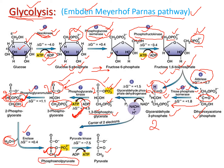In step ten, the enzyme pyruvate kinase converts phosphoenolpyruvate to pyruvate. Dephosphorylation takes place — the phosphate group on PEP is released and transferred to ADP, converting it to ATP, just as in step seven. Phosphoenolpyruvate has higher energy than pyruvate, and that excess energy is stored in the ATP.